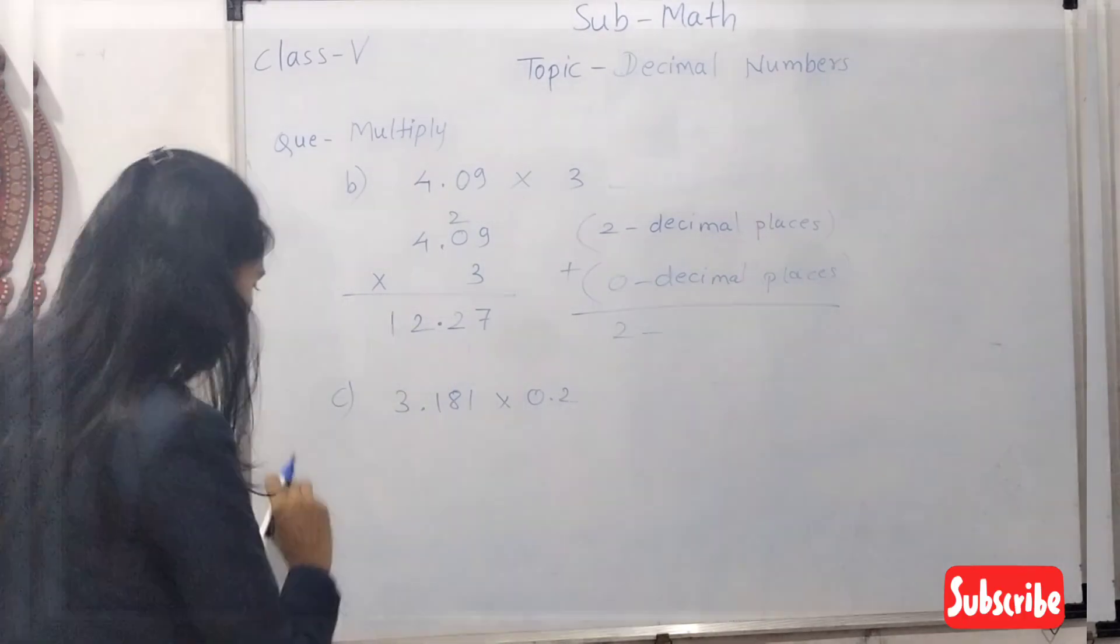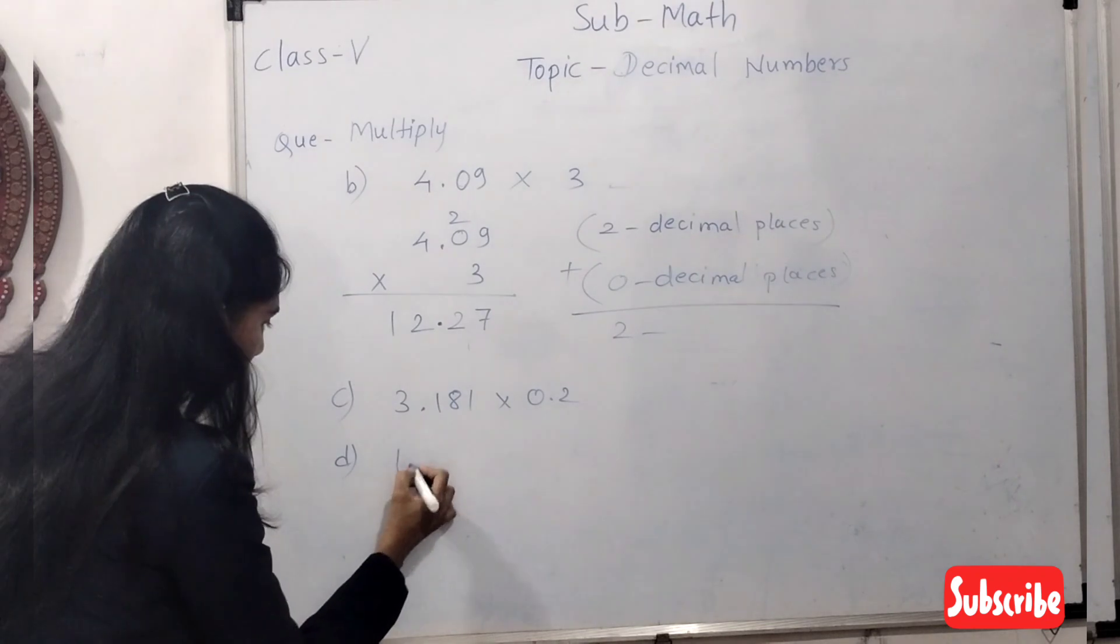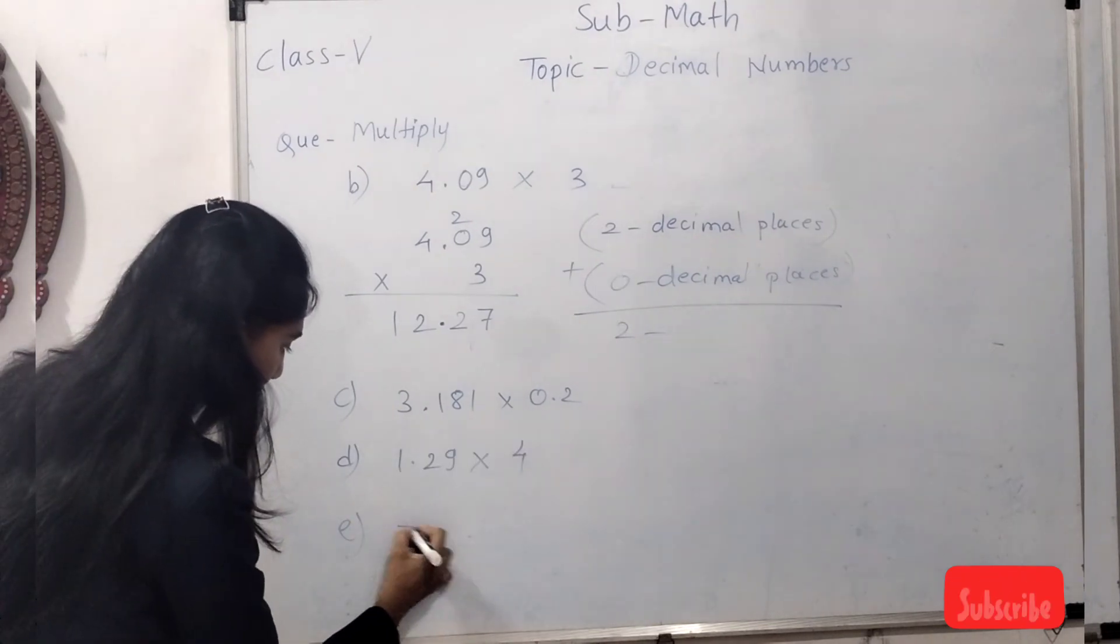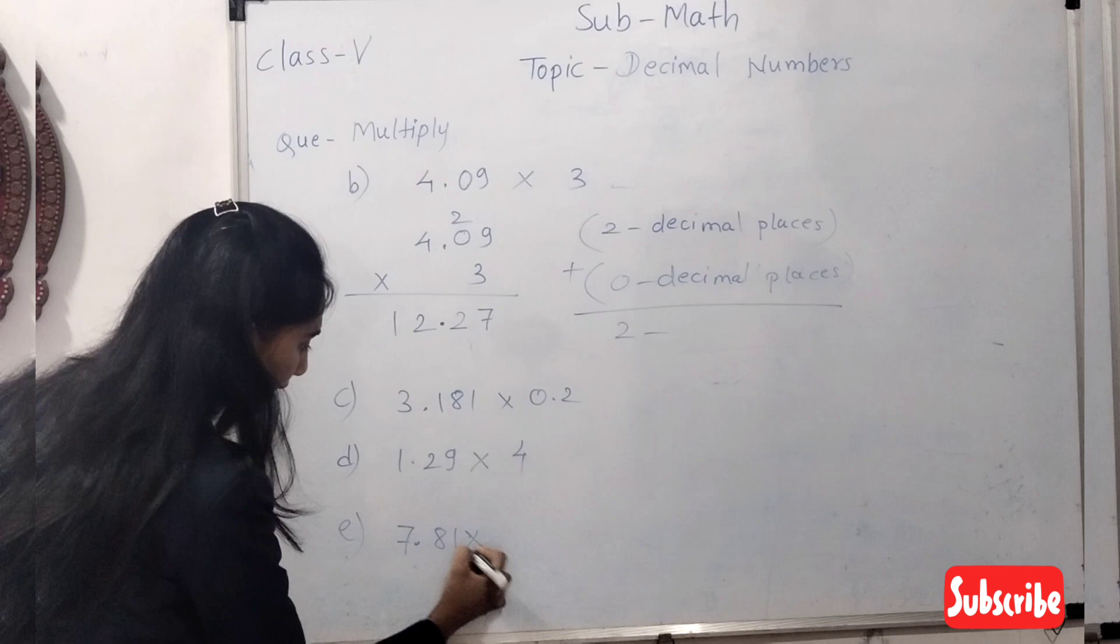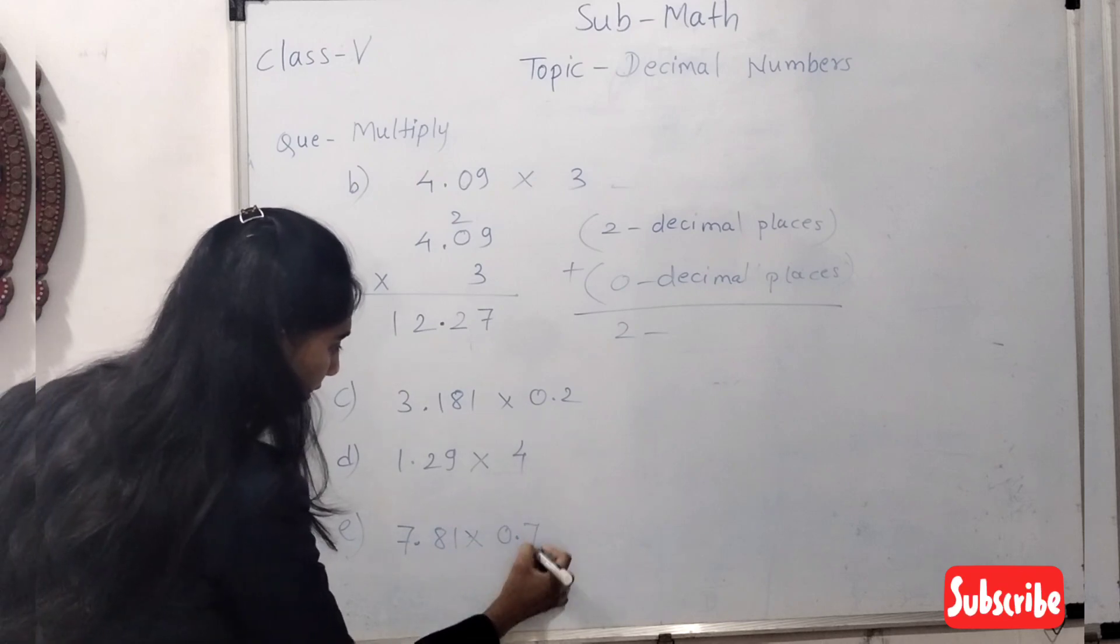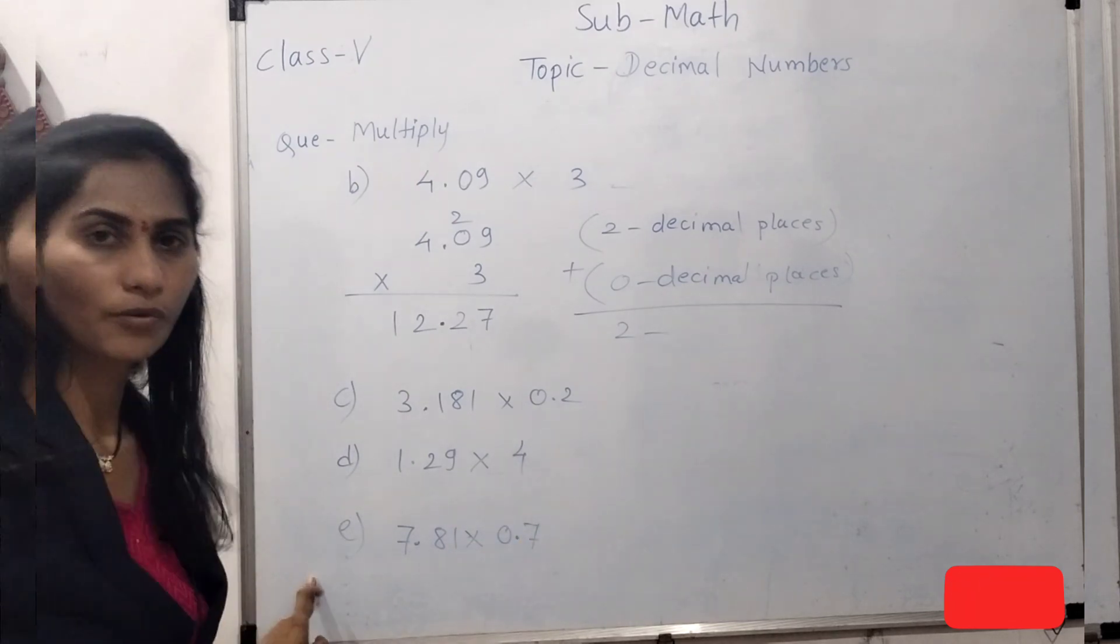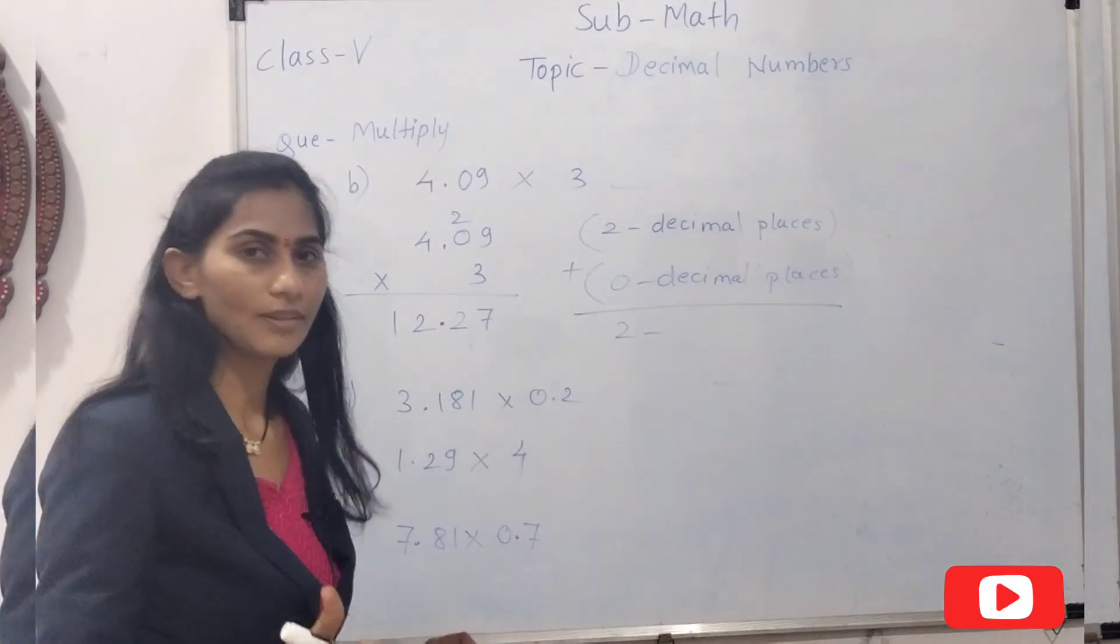Take one more: 1.29 times 7.81 multiplied by 0.7. This is enough for today's practice. All the best.